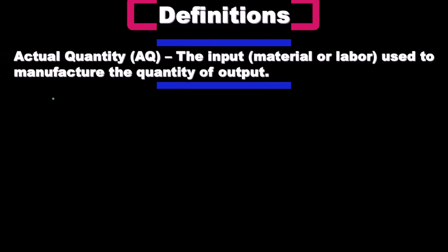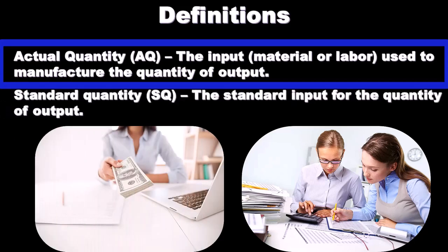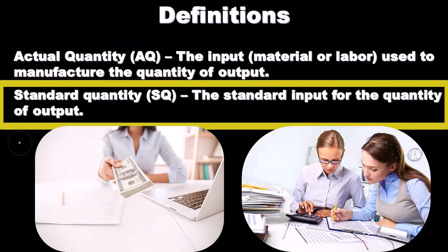The actual quantity, AQ, is the input — material or labor — used to manufacture the quantity of output. We're making units of inventory, which includes materials, labor, and overhead, though we're concentrating here on materials and labor. AQ represents units of input: units of material or typically hours for labor. The standard quantity, SQ, is the standard input expected for the quantity of output — what we would expect to happen under normal conditions.